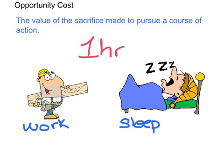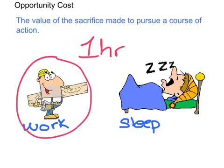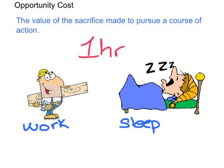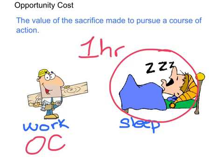Let's take a look at an example. You have one scarce hour. In this hour, you can either choose to work or sleep. Let's say you chose to work. The opportunity cost of taking this course of action would be sleeping, because you gave up sleeping to pursue work. If you chose to spend that one hour sleeping, then the opportunity cost would be working, because you sacrificed working to have that hour of sleep.